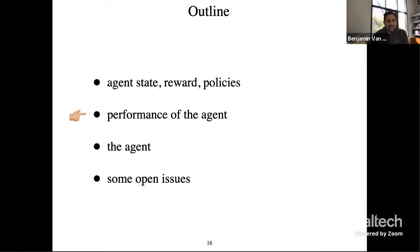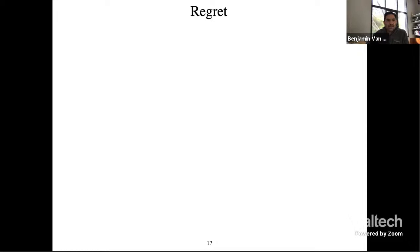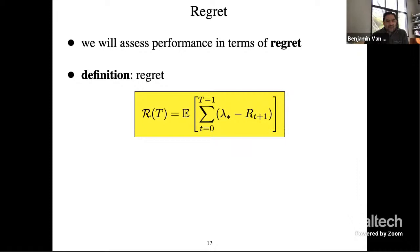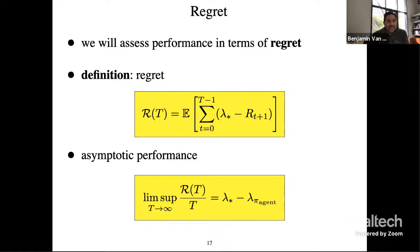Let's talk about the performance of the agent. We're going to assess performance in terms of regret. Regret at time T is the sum up through time T minus one of the optimal reward minus the realized reward — the maximum average reward minus the realized reward. If you look at the asymptotic performance, that's the limit of regret divided by time, which gives you lambda* minus lambda pi_agent — the difference between the optimal average reward and the average reward achieved by the agent.